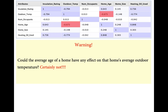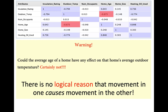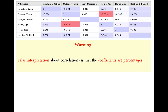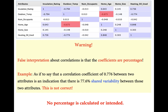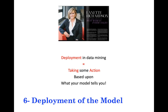Another warning: many students make the mistake of treating correlation coefficients as percentages. If there is a correlation coefficient of 0.776 between two attributes, that does not mean there is 77.6% shared variability. Percentages are not used with correlation. The coefficient is a proportion of shared variability between two attributes ranging from negative one to positive one — make sure not to make that mistake in your analysis or assignments.